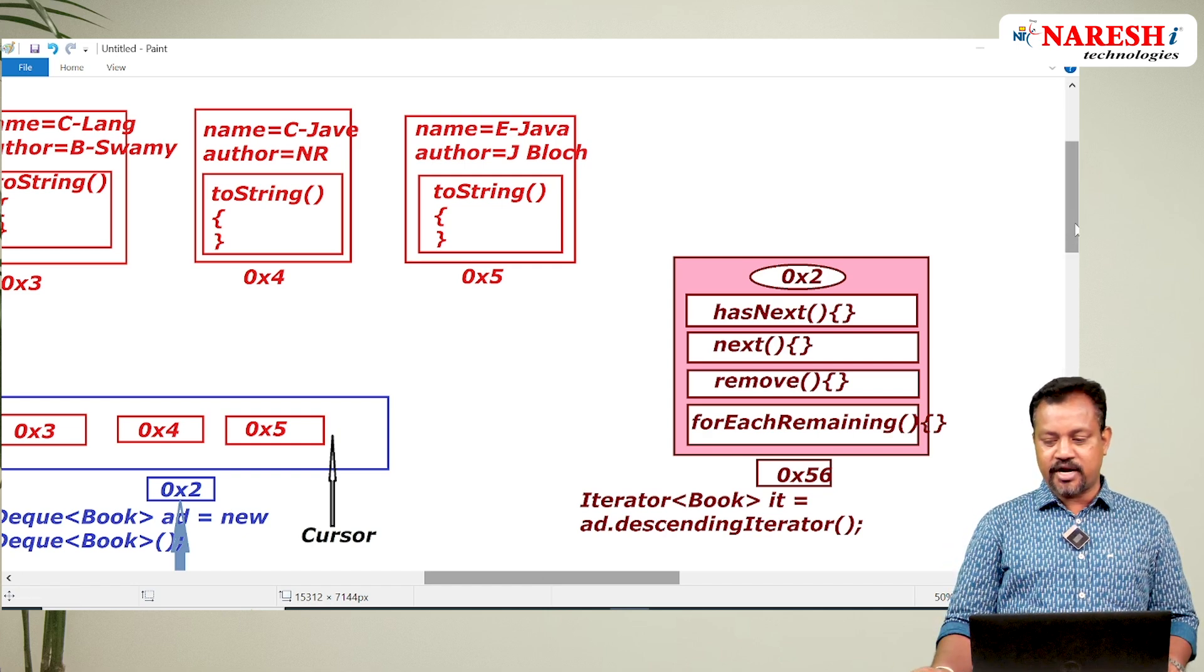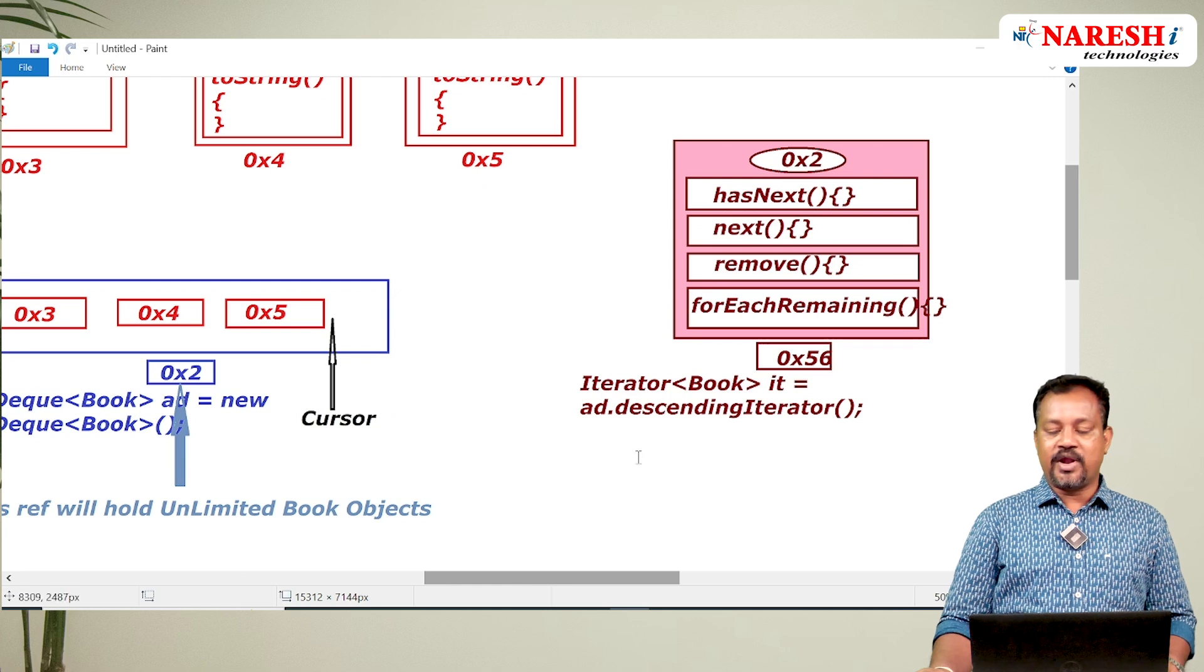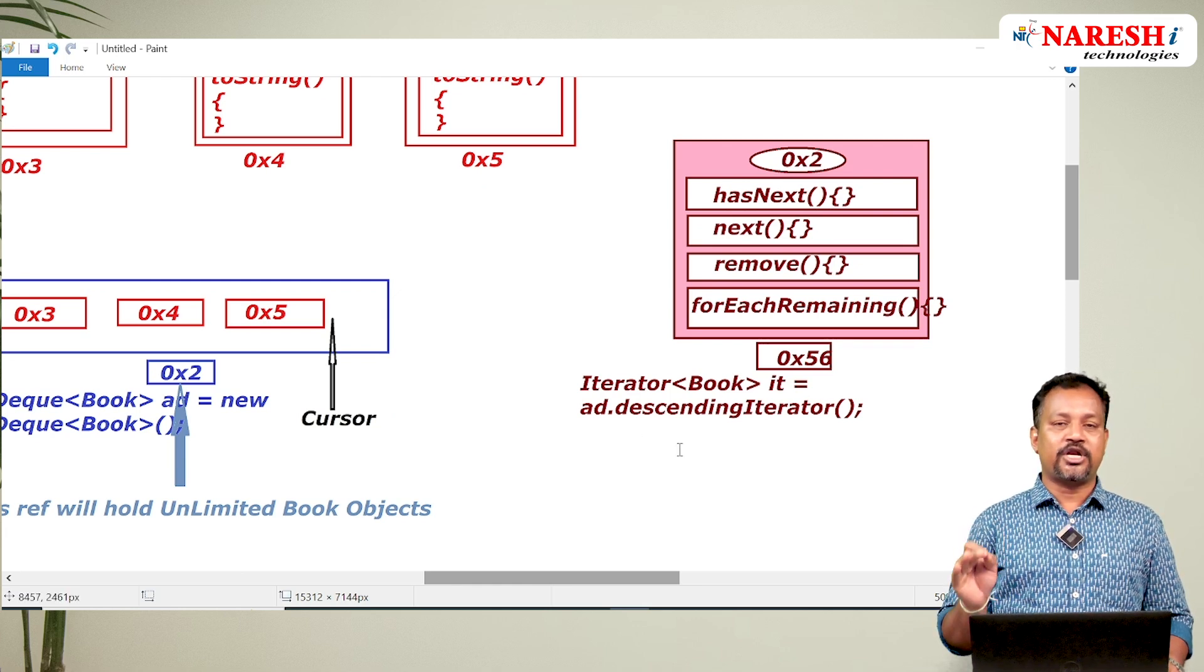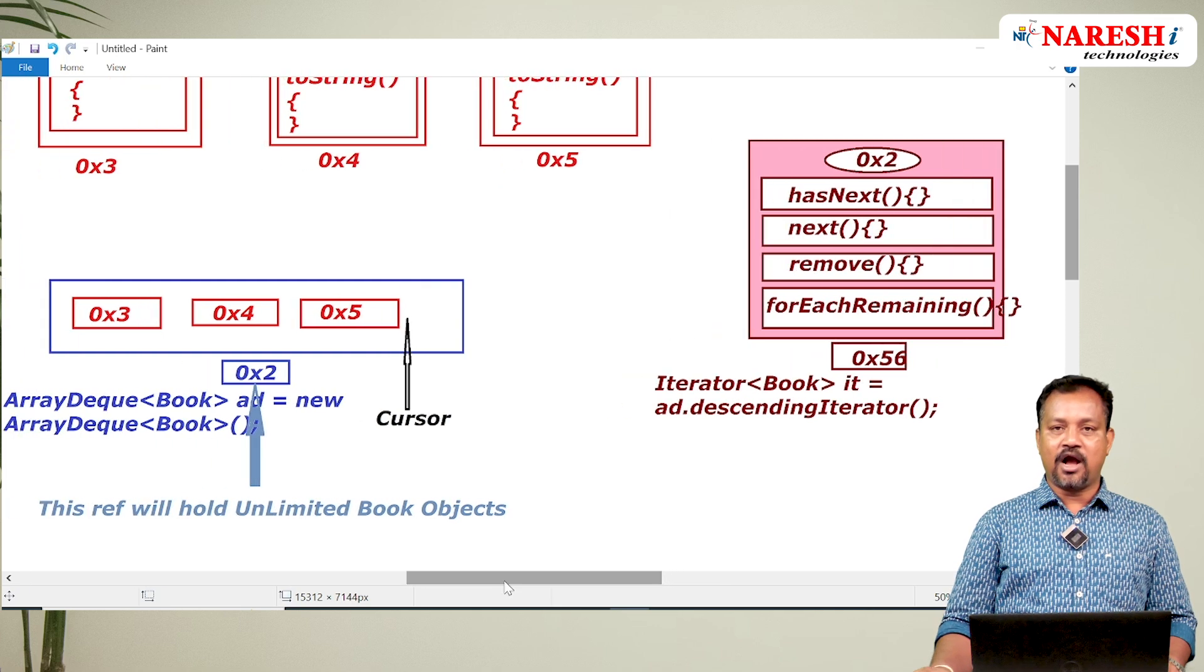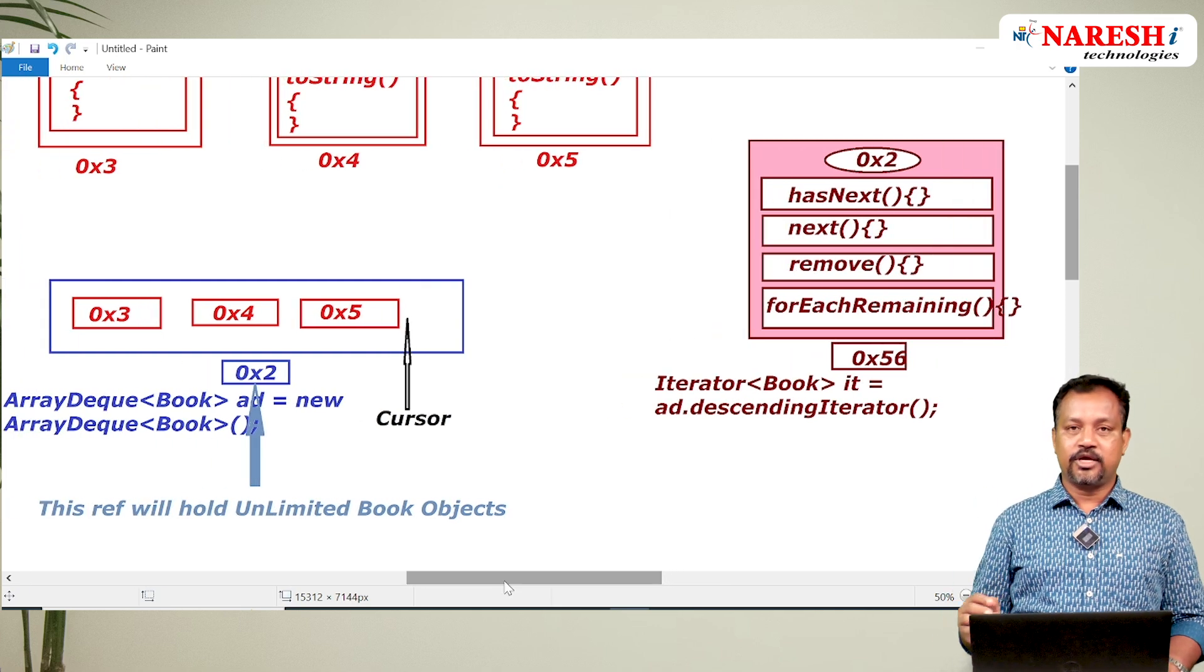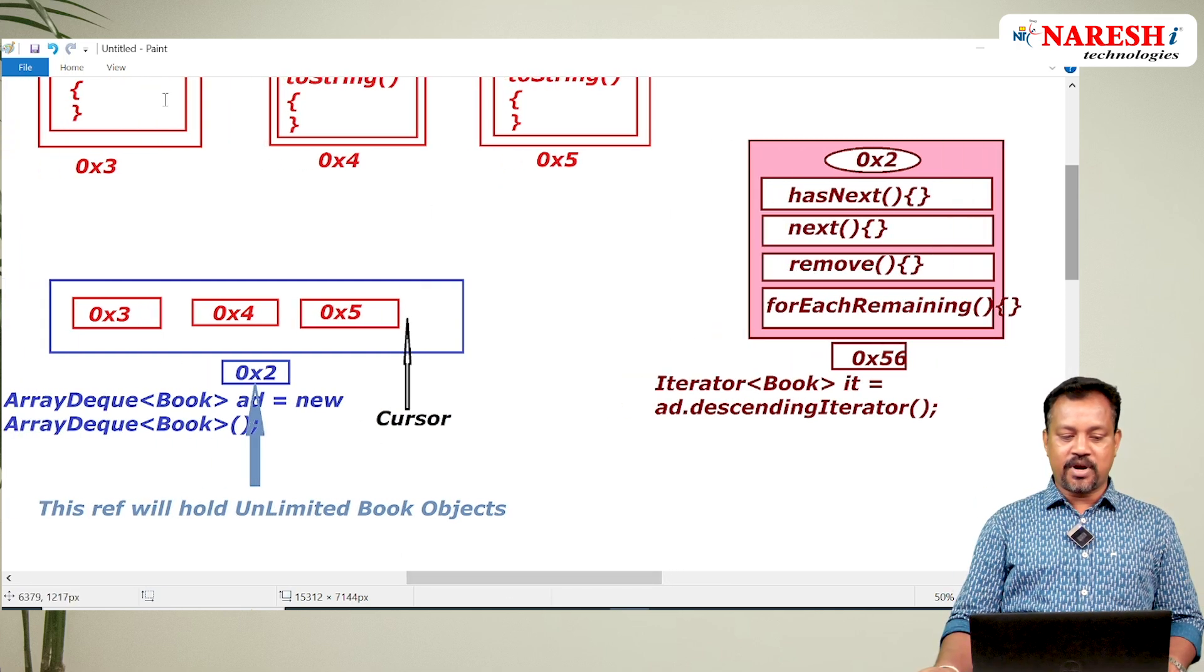In this process, what I am trying to say here: whenever I use descending iterator method to create implementation of iterator, one cursor is created after the last element. You can see the diagram - I created one cursor here.